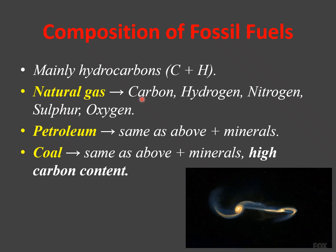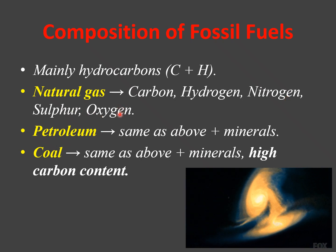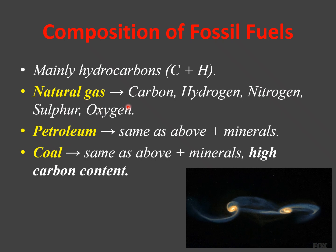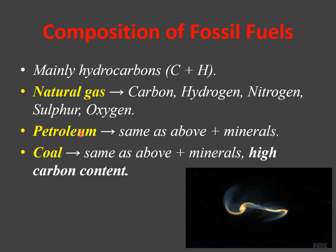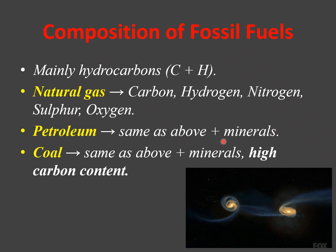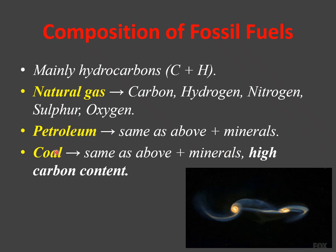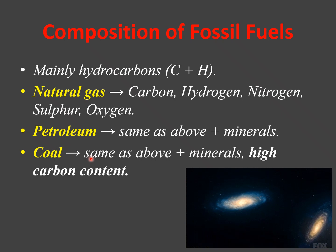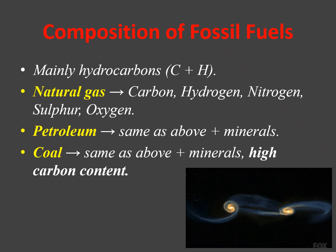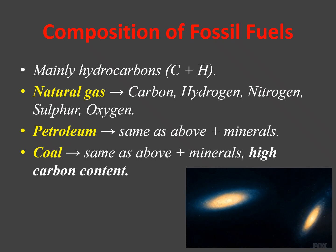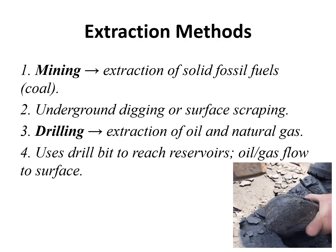For natural gas, it has carbon, hydrogen, and other gases like nitrogen, sulfur, and oxygen — though the biggest percentage is carbon and hydrogen. Then petroleum has the same composition as natural gas but with an addition of some minerals: carbon, hydrogen, nitrogen, sulfur, oxygen, plus some minerals. Then coal is the same as petroleum but has a higher carbon content compared to petroleum.